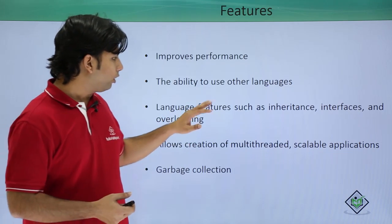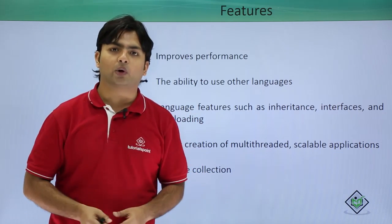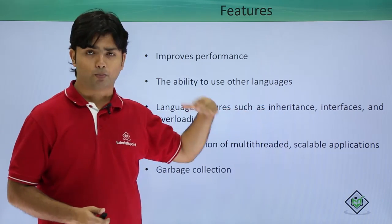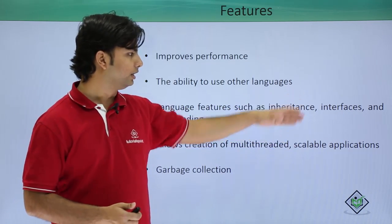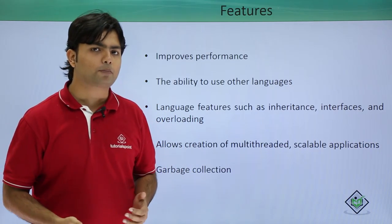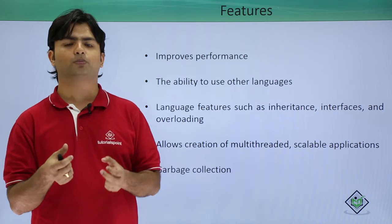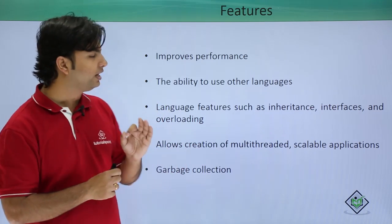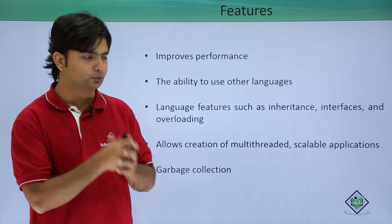CLR also supports runtime features of object-oriented programming such as inheritance, overloading, method overriding, dynamic polymorphism, and interfaces. In object-oriented programming, there are things that need to be implemented at runtime, and CLR provides definite support for those features.